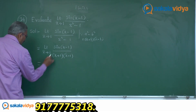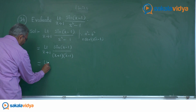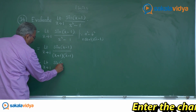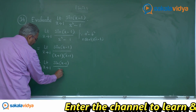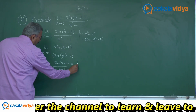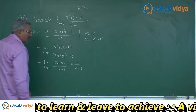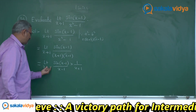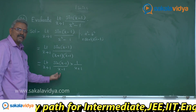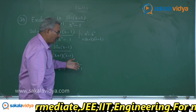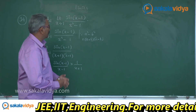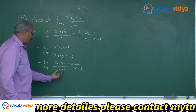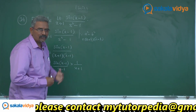Now the terms can be rearranged as: limit x tends to 1 of sin(x-1)/(x-1) multiplied by 1/(x+1). Using the properties of limits, the limit can be applied to sin(x-1)/(x-1) as well as to 1/(x+1) separately.